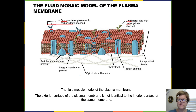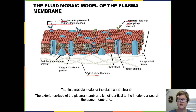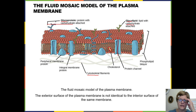On the inner surface, you can see the cytoskeleton — the microfilaments — that attach to some of the proteins shown in blue on the inside surface of the membrane. These components, especially the phospholipids, membrane proteins, and cholesterol, move around.